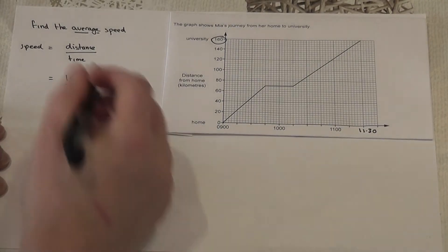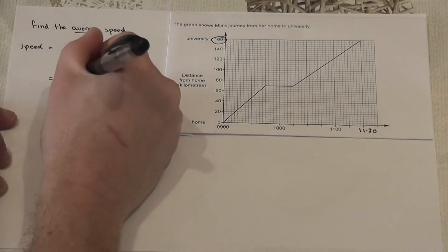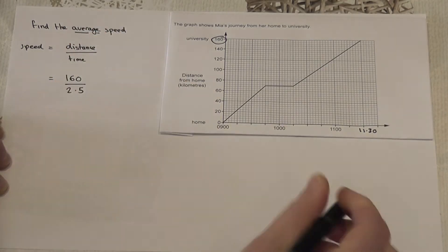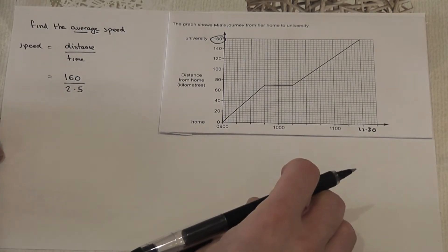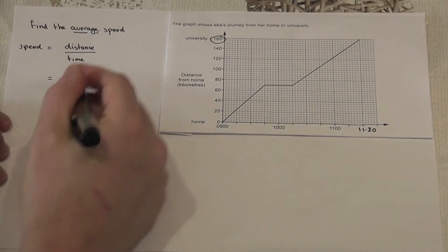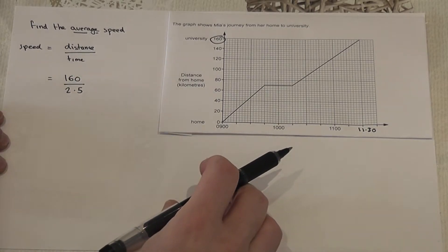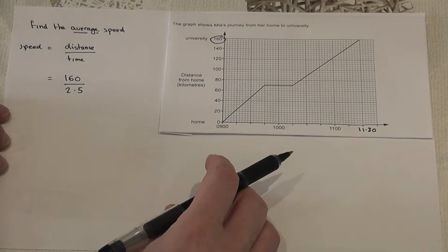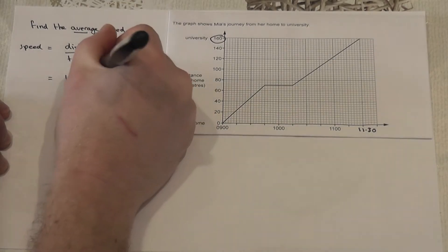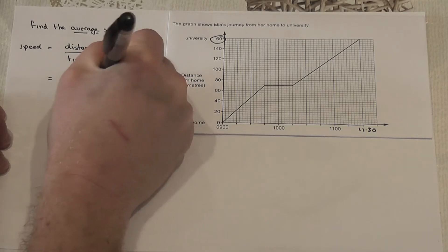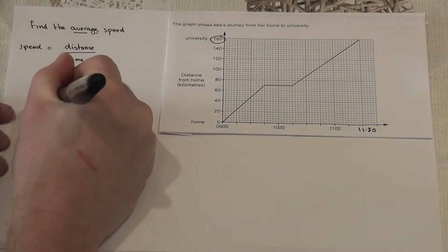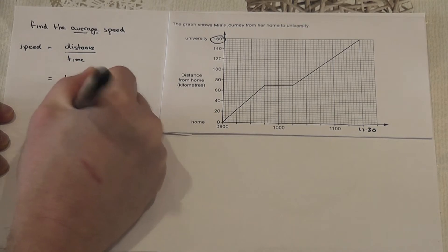So to find the speed it's 160 kilometers in two and a half hours. So I've got to work out 160 divided by 2.5. To make this easier I'm going to times the top and the bottom by two. So this becomes 320 divided by 5.